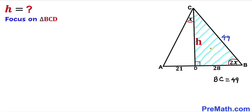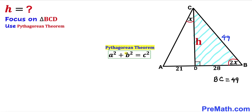Here's our final step. Let's focus on right triangle BCD and calculate this height H using the Pythagorean theorem: A squared plus B squared equals C squared. The hypotenuse is BC, our longest side. So with A equal to H, B equal to 28, and C equal to 49, we get: H squared plus 28 squared equals 49 squared.